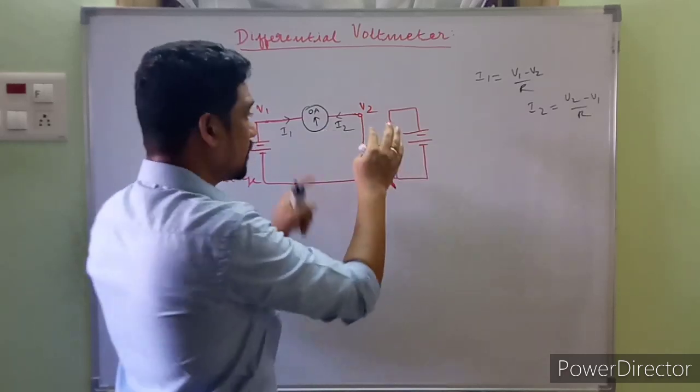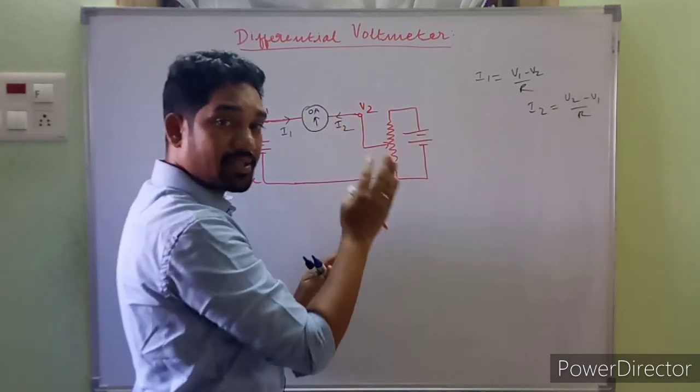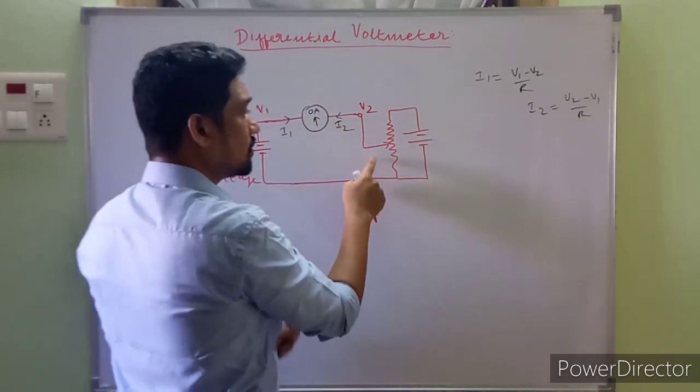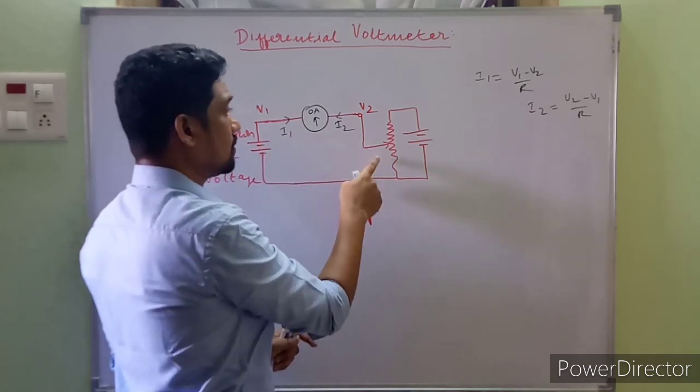In other words, the voltage drop on either side of the null detector is zero. More precisely, the unknown voltage is equal to the known voltage.